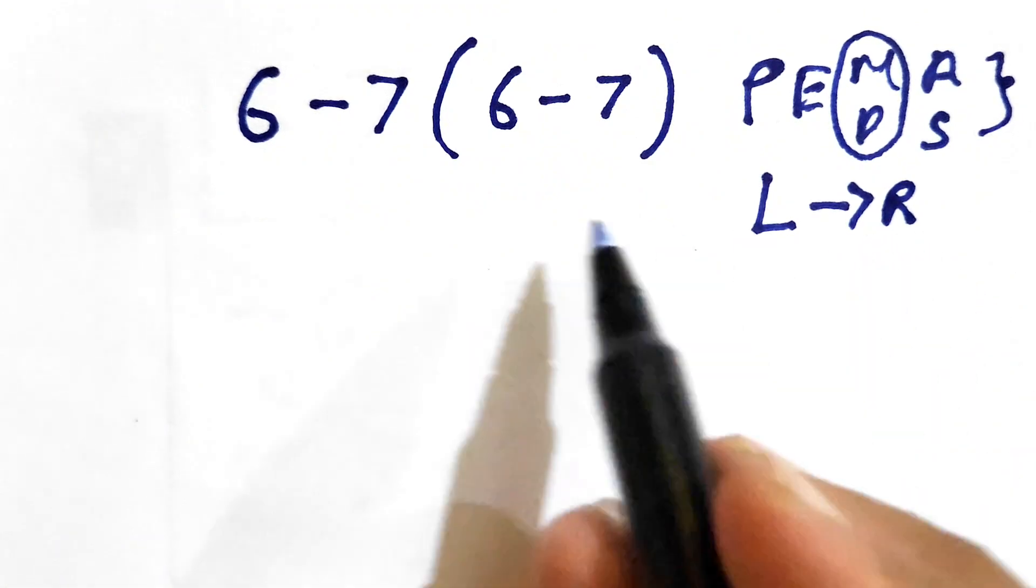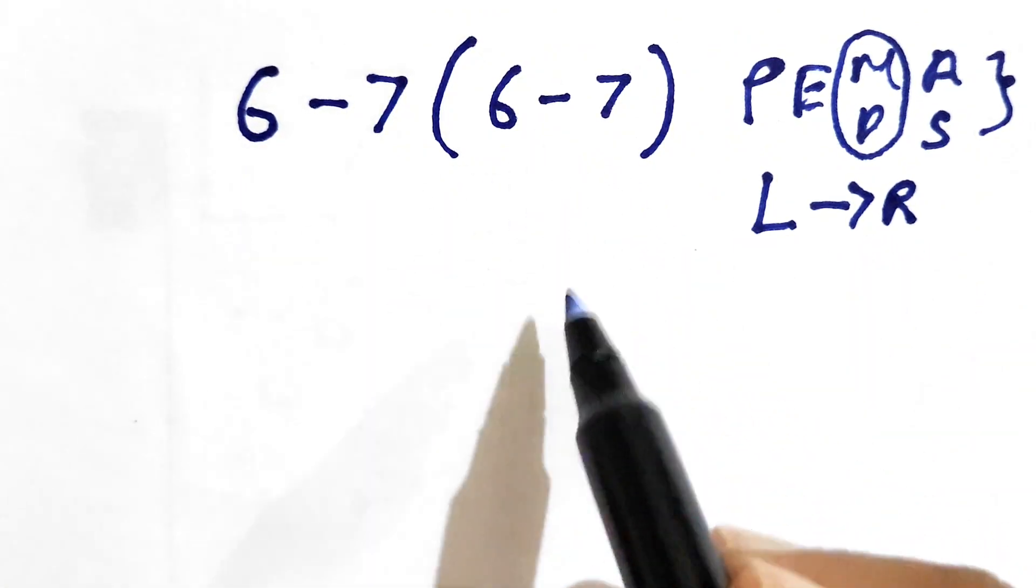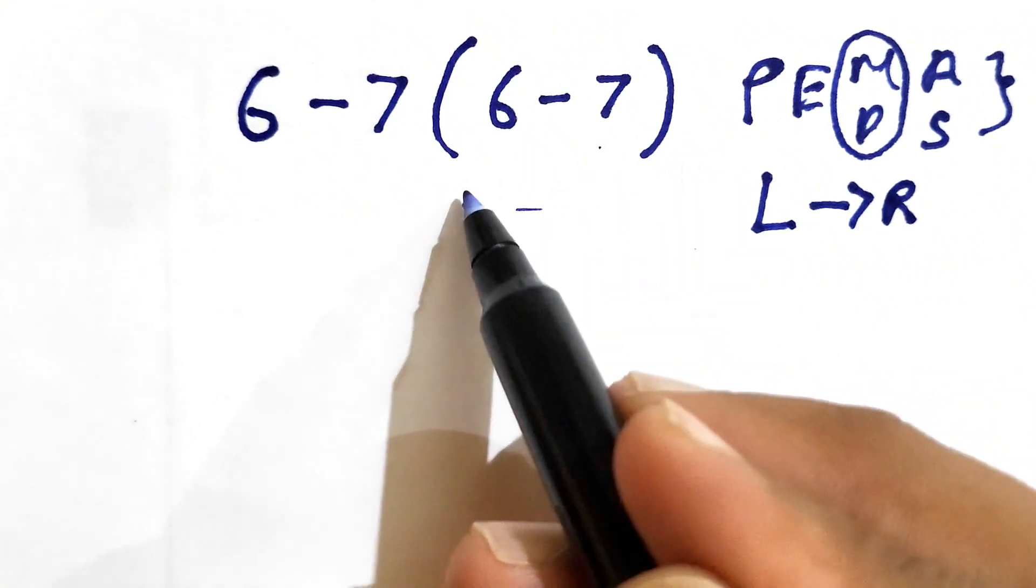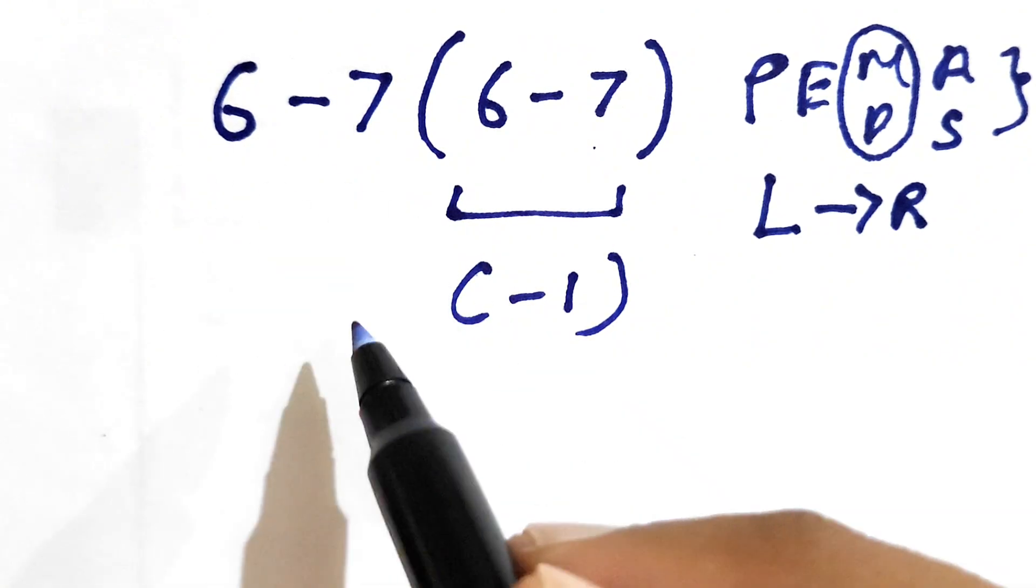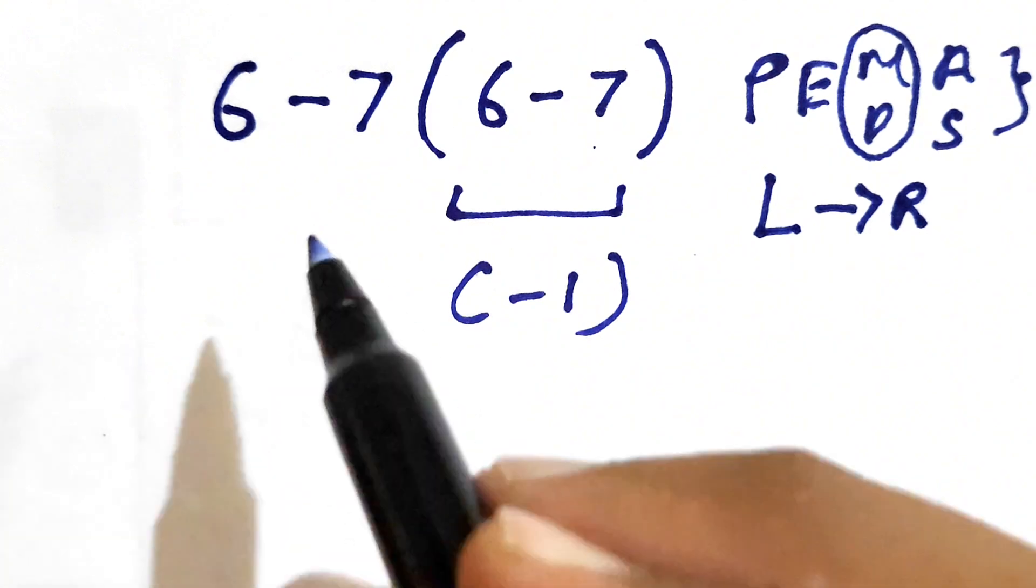As we can see in this expression, we need to first solve the parenthesis, that is the 6 minus 7, that gives us negative 1. Now we need to rewrite the expression once again to make the confusion less.